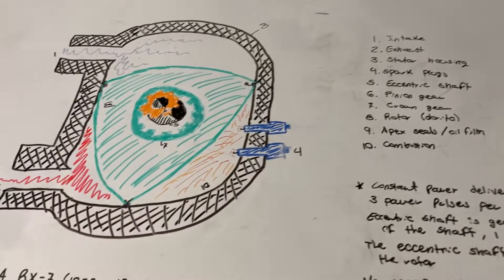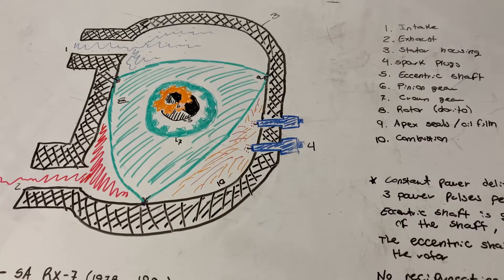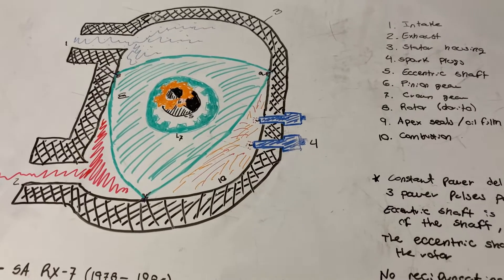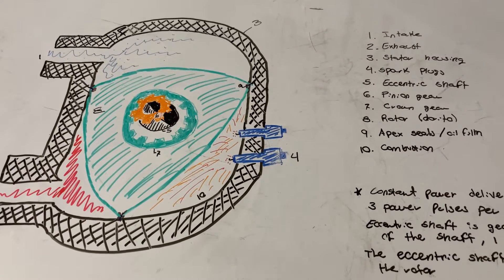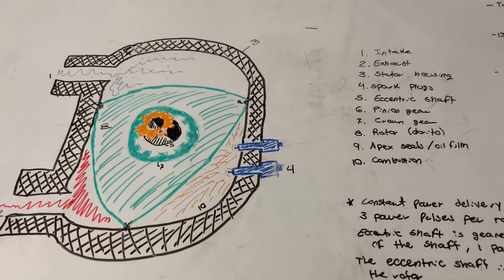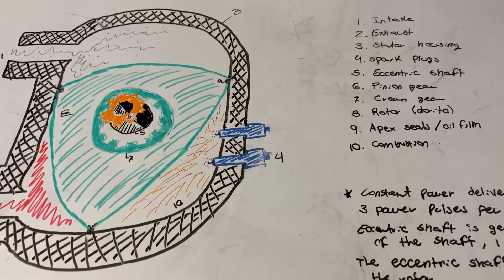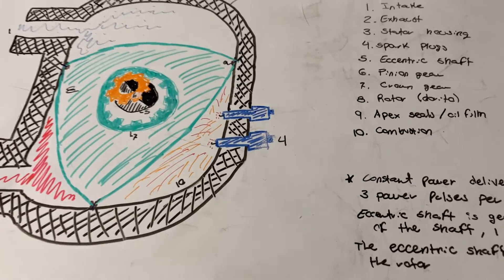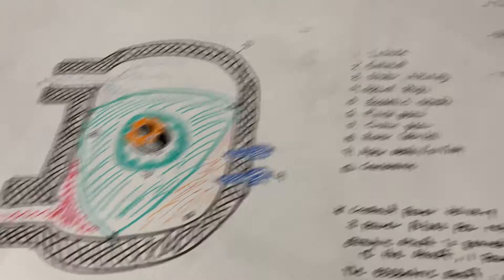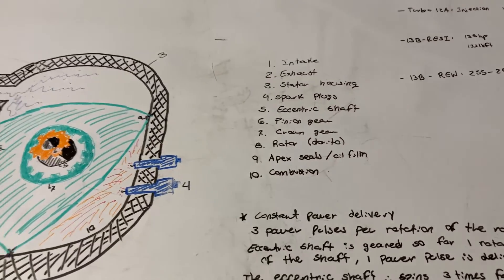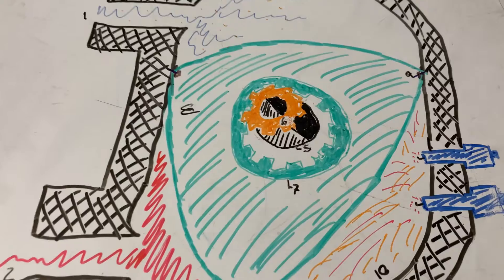Number four is the spark plugs. I think that most, if not all, Mazda Wankel engines — rotary engines are called Wankel engines after their inventor — use two spark plugs per rotor. Number five is your eccentric shaft.